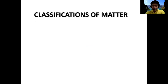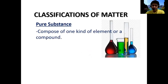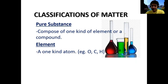Let us now discuss the classifications of matter, beginning with pure substances. These are substances composed of one kind of element or compound. The first subclassification is the element — an element is composed of one kind of atom. Everything in the periodic table represents different kinds of elements, like oxygen (O), carbon (C), and hydrogen (H).